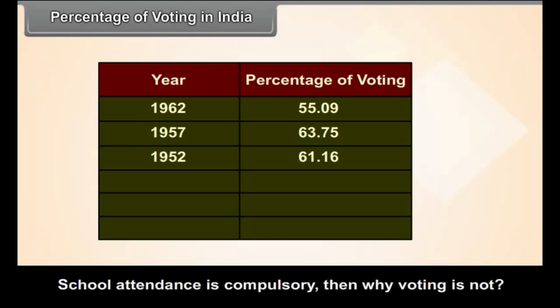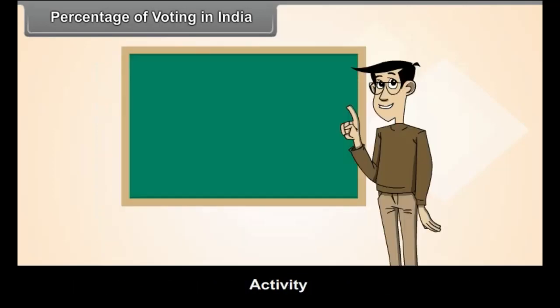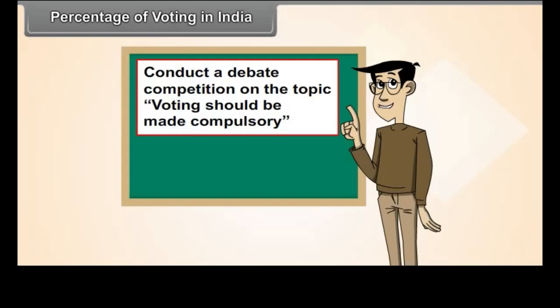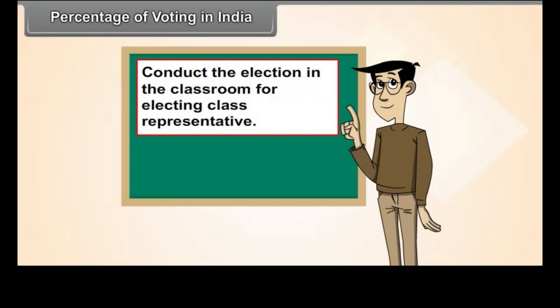School attendance is compulsory — then why is voting not? Activity: Conduct a debate competition on the topic 'Voting should be made compulsory.' Also, conduct an election in the classroom for electing a class representative.